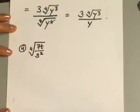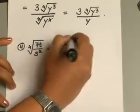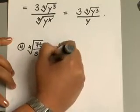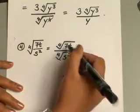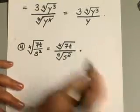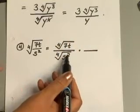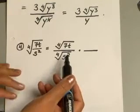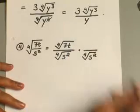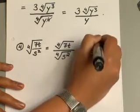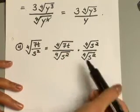One more example involving the fourth root. Apply the quotient rule to get fourth root of 7t over fourth root of s squared. Since 7t cannot be simplified, we focus on rationalizing the denominator. You have s to the second power, so you need s to the second more to make it s to the fourth, which will cancel the radical. So when you rationalize, you multiply by fourth root of s squared.